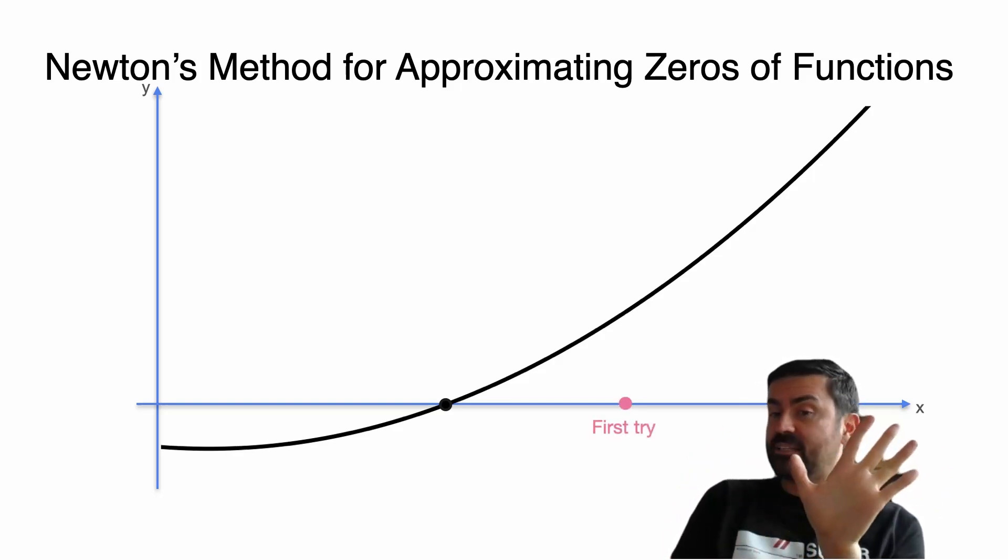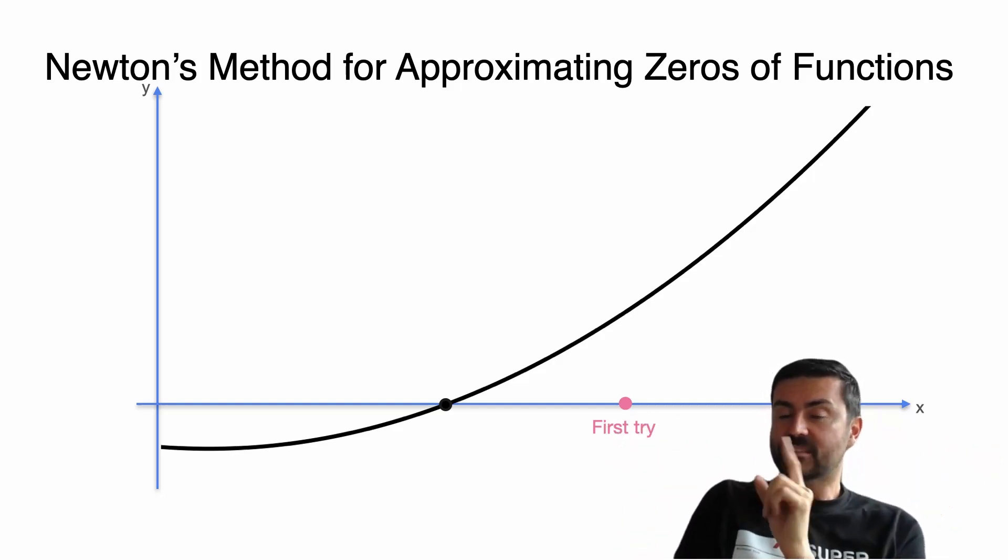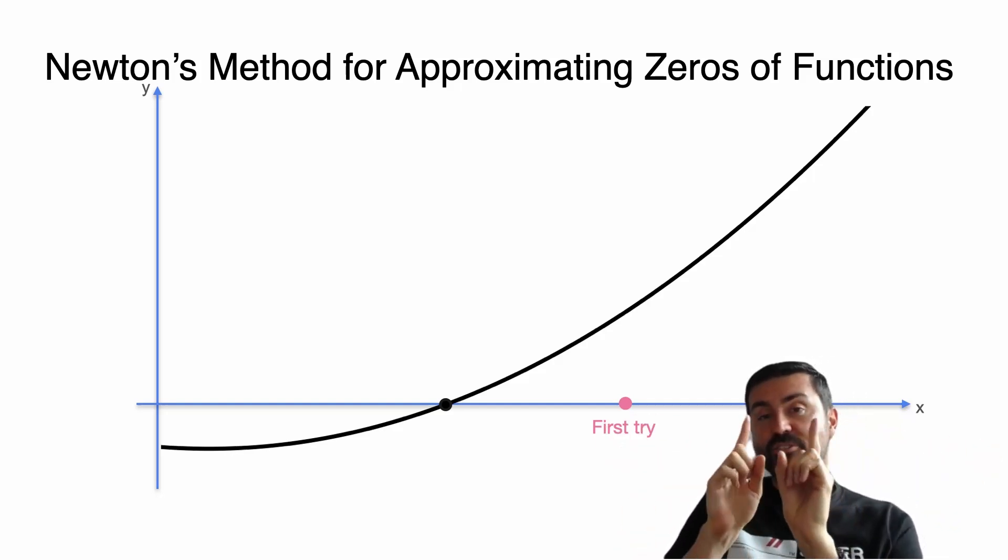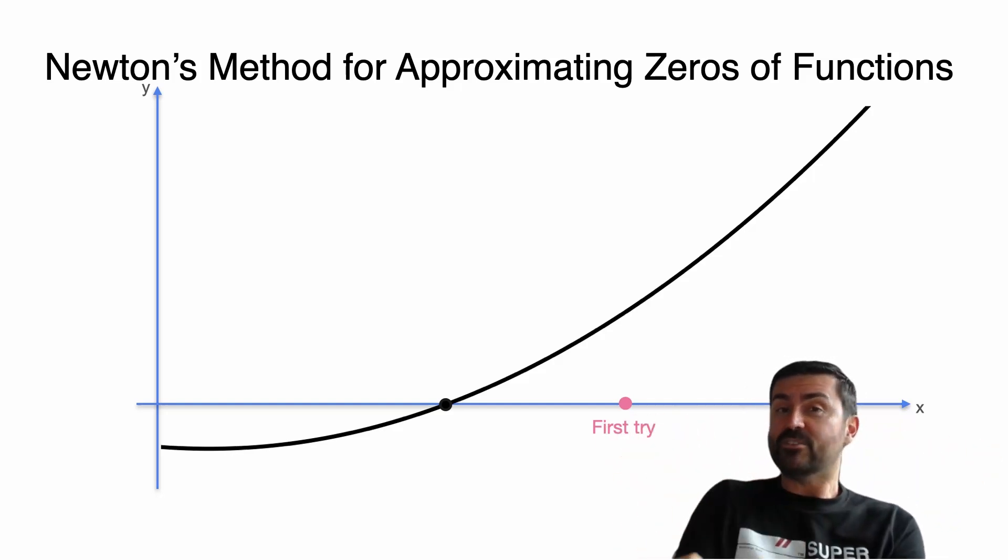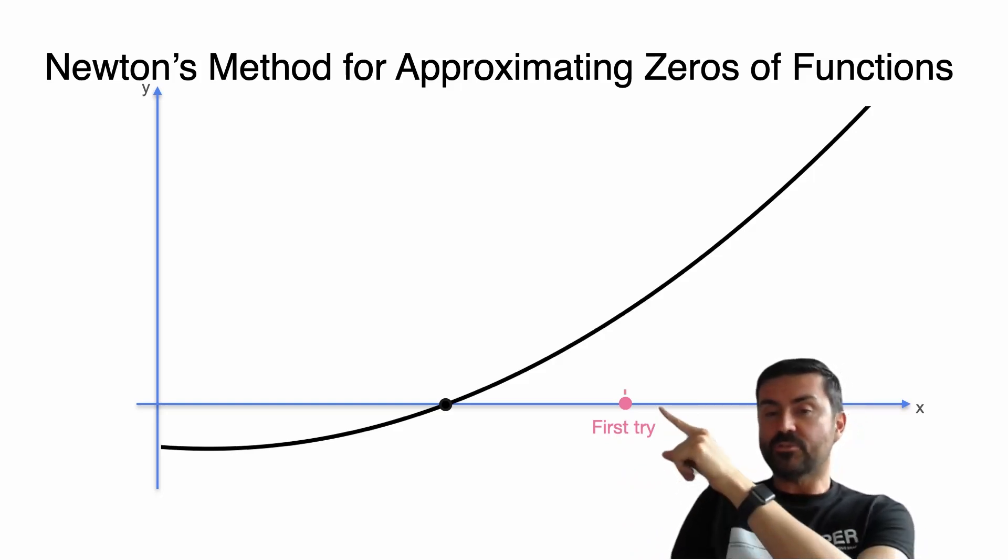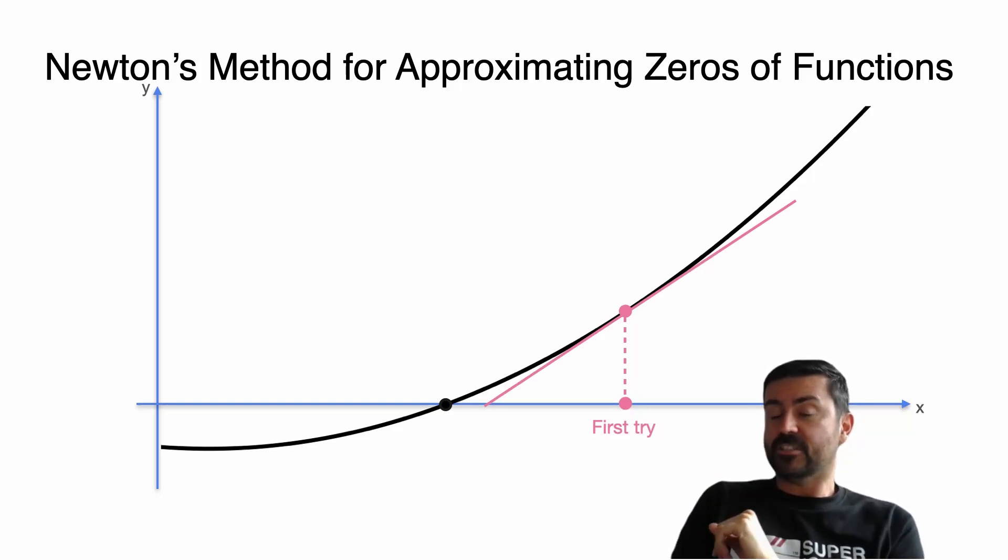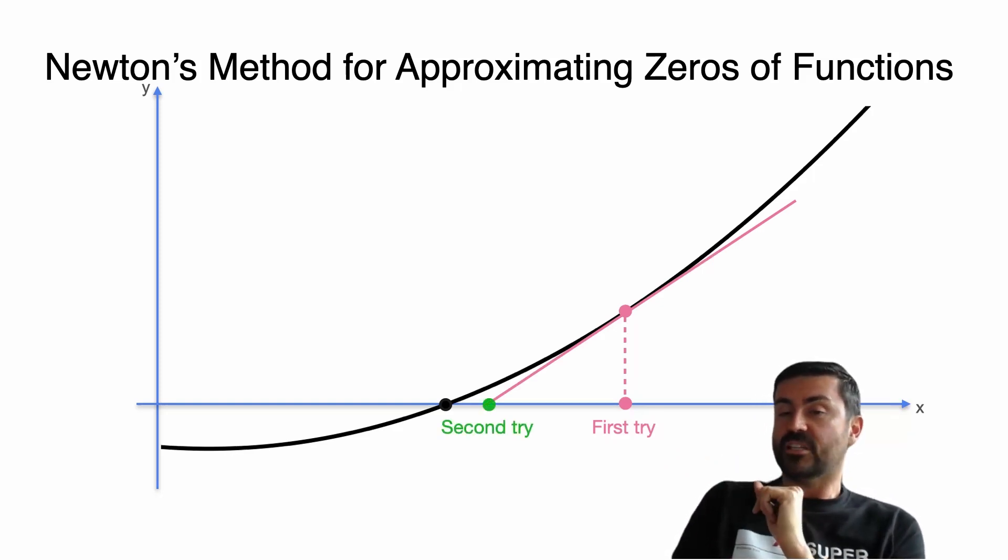How? First we draw the line and see where it hits the function. Then we draw the derivative of that function there - we draw a tangent and we see where it hits the horizontal axis. That's our second try.